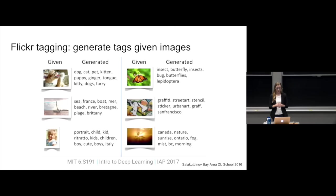Looking at examples of this model: given a picture of a cat, the vector for that image is close to the words dog, cat, pet, kitten, tongue, furry. So it's working pretty well as an automated tagger for Flickr.